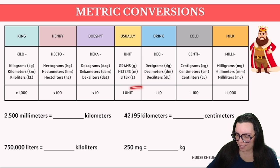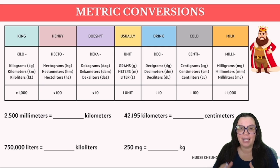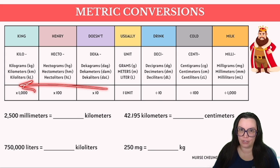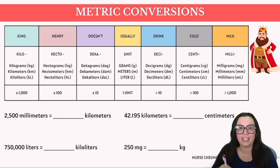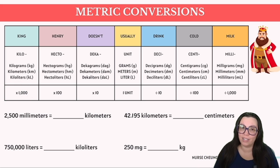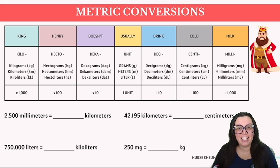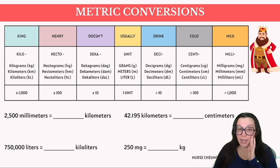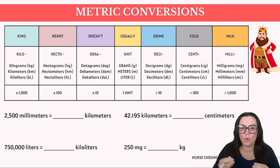The word 'usually' represents the base unit — grams, liters, or meters. Moving right toward 'cold milk' gives smaller units: deci, centi, milli — each a factor of 10 smaller. Moving left gives larger units: deca, hecto, kilo — each a tenfold increase. A kilo therefore signifies 1,000 times larger than the base unit. This framework mirrors what we did in the decimal placeholders video.